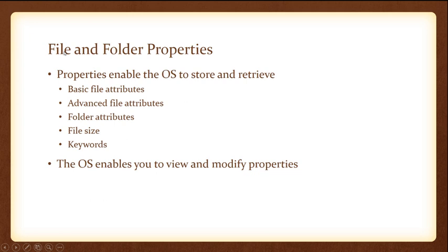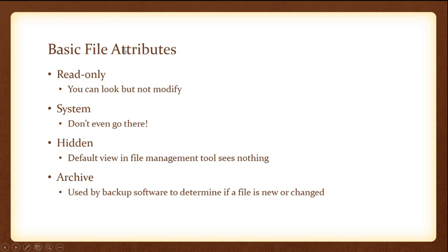The next thing we're going to talk about in detail is file and folder properties. Properties enable the OS to store and retrieve files and folders. We'll go into basic file attributes, advanced file attributes, folder attributes, file size, and keywords. The basic file attributes are read-only, system, hidden, and archive. These are yes-no values for a file — you either turn them on or turn them off. There's no in-between, no halfway — it's either on or off.